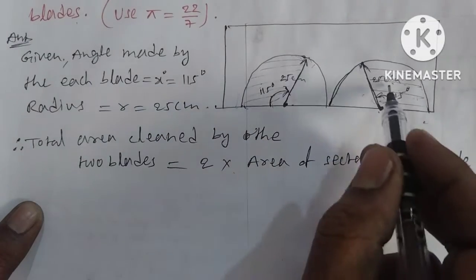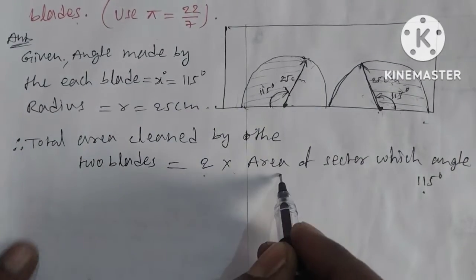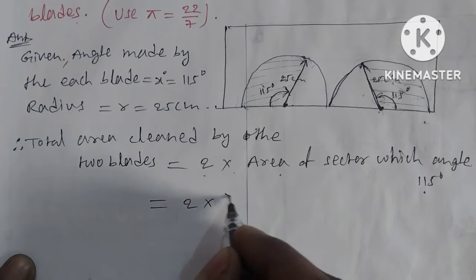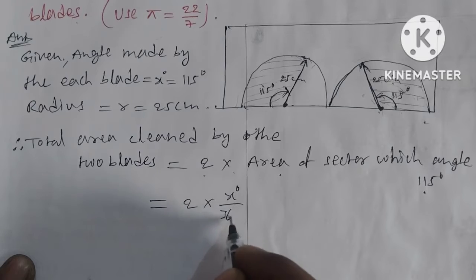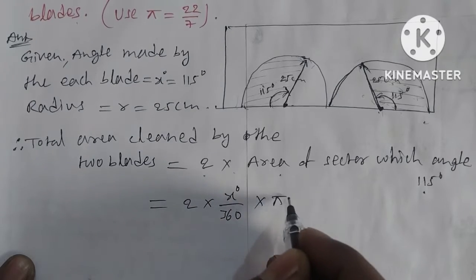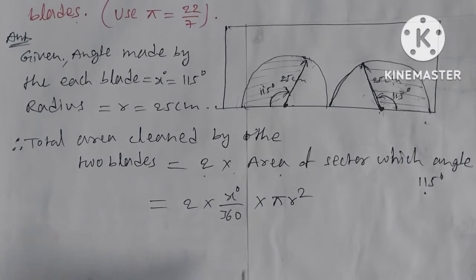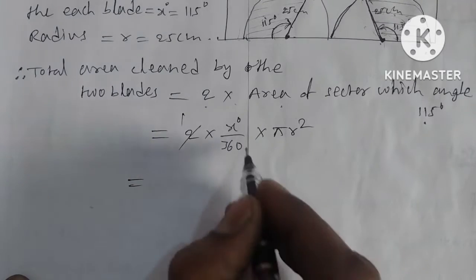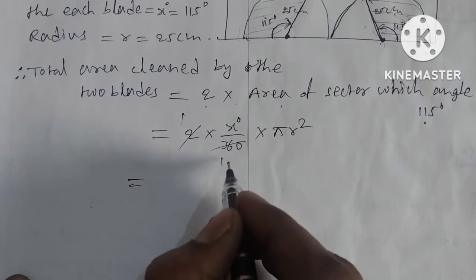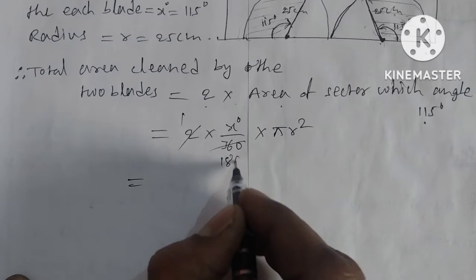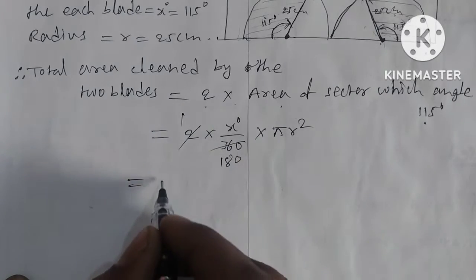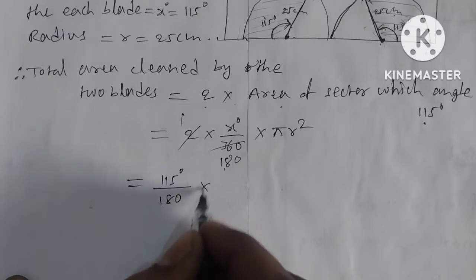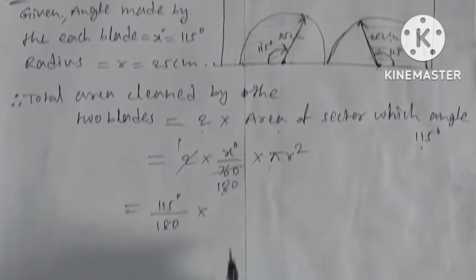One sector gives us the area of the sector. The sector angle formula is: (x degrees / 360) × π r². This is the area of the sector formula. So, area = 2 × (115/360) × π r², which becomes 115/180 × π × (22/7).